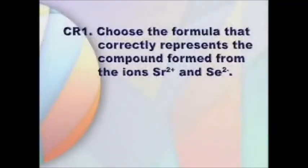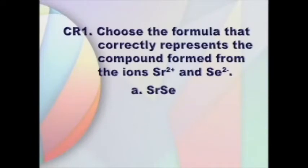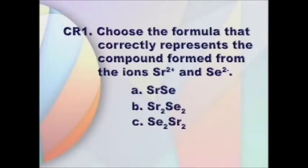Cumulative review question number one takes us back to ionic formula writing. Which of the following correctly represents the compound formed from the ions Sr2+ and Se2−? A, SrSe. B, Sr2Se2. C, Se2Sr2. D, SeSr.